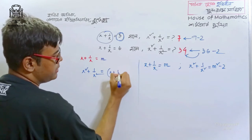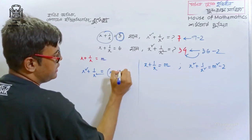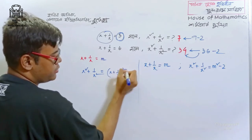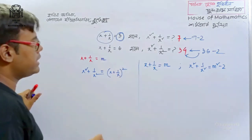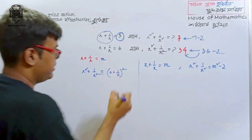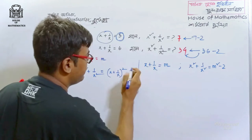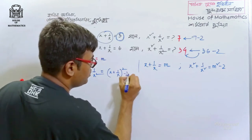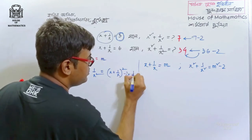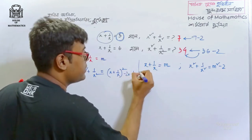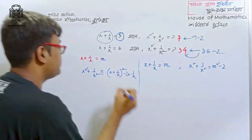We can do this. Now what is this? This is minus 2 into x into 1 by x. We know the formula.